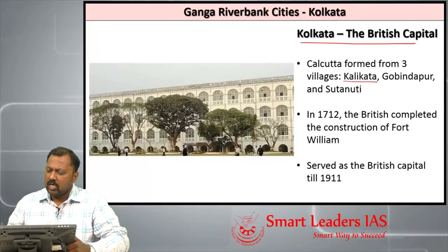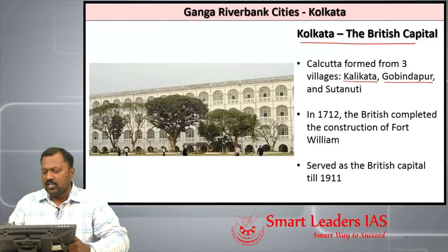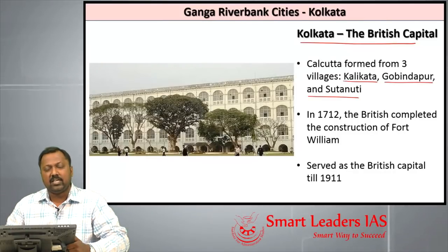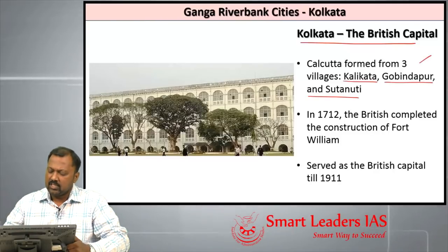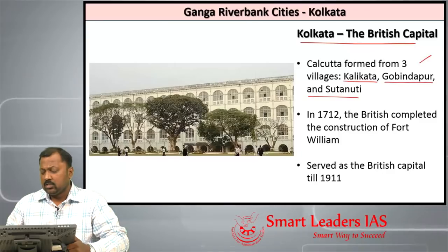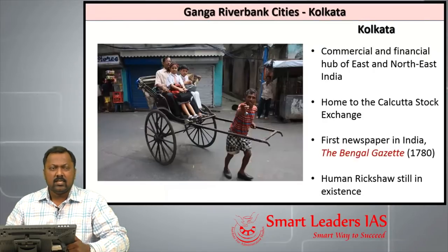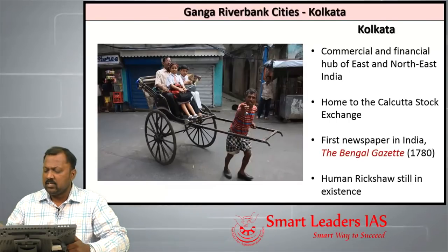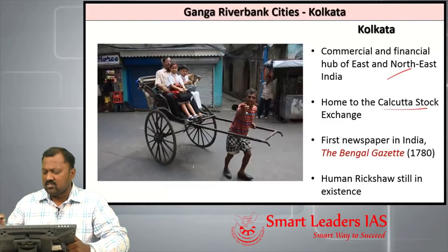Kolkata was formed by amalgamating three important villages: Kalikata, Govindapur, and Sutanuti. In the 1690s, the zamindari rights of these three villages were taken by the British. In 1712, the British completed the construction of Fort William at Kolkata. Kolkata served as the British capital till 1911 and is the commercial and financial hub of East and Northeast India, also home to the Kolkata Stock Exchange.